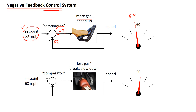In the opposite situation, you're going a bit over 60, let's say 62. The negative feedback comparison says that since the speed is greater than the set point, a negative signal goes to the gas to make the car slow down. All sorts of negative feedback systems like this operate in the body.